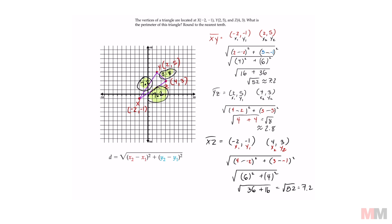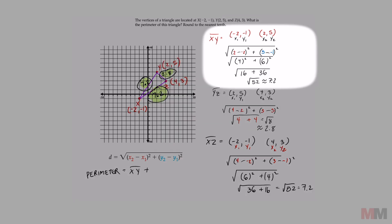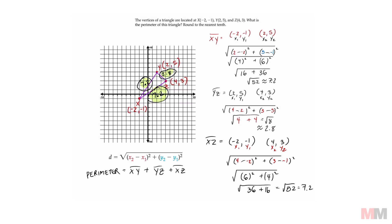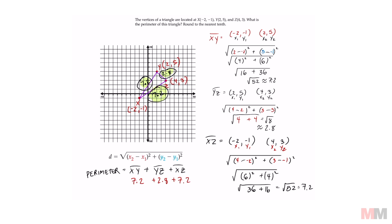To find the perimeter, we just have to add up the distance of all three line segments — XY, YZ, and XZ. That's going to be 7.2 plus 2.8 plus 7.2. Finally, we get our answer: that equals approximately 17.2.